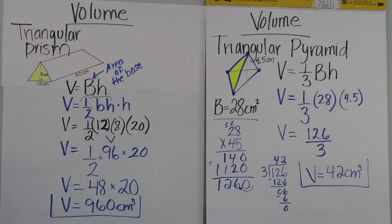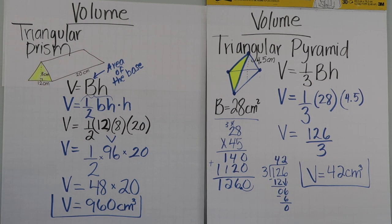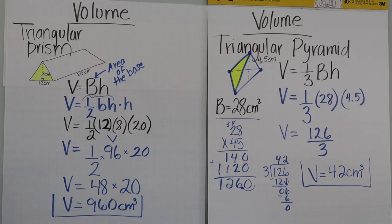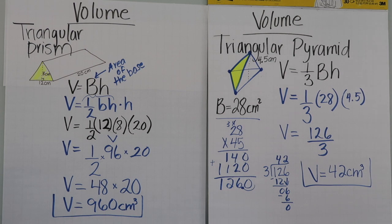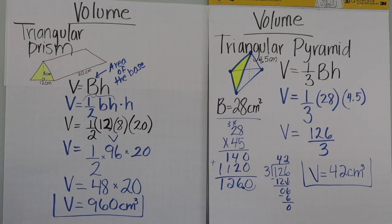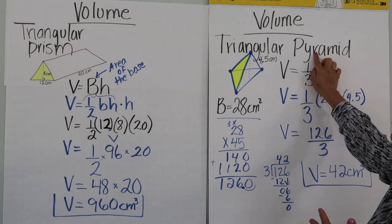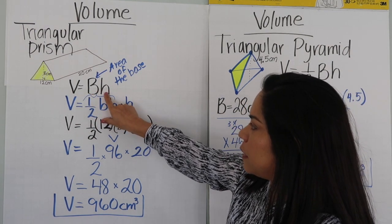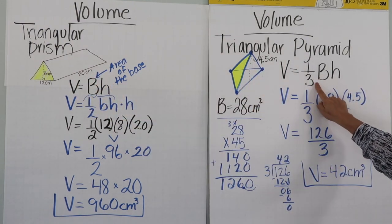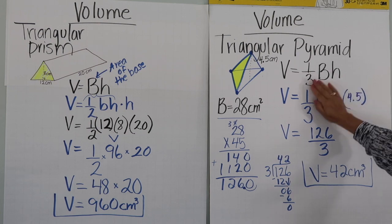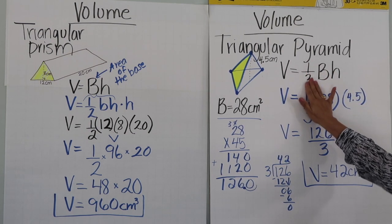Here you have both side by side. On the left is the triangular prism, on the right is the triangular pyramid. The difference between the two formulas is that for the pyramid, you divide by 3. For the triangular prism, you find the area of the base and multiply by the height. For the pyramid, you find the area of the base if it's not given, multiply by the height, then divide by 3. That is the only difference.